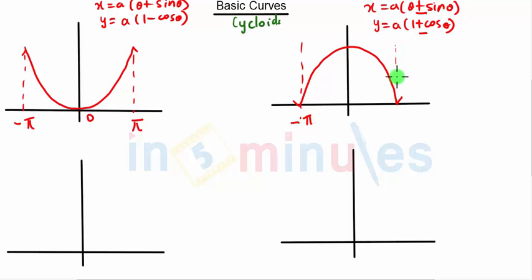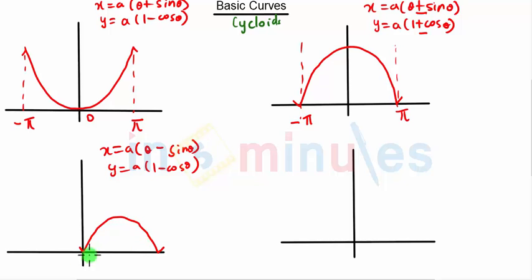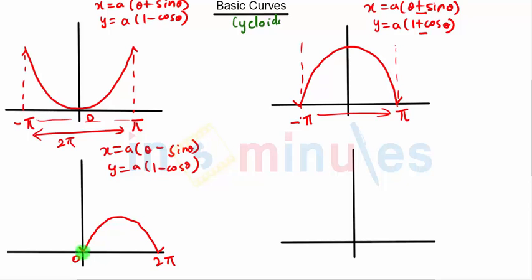This point will be -π and this point will be π. When both terms are negative — that is, x = a(θ - sin θ) and y = a(1 - cos θ) — the curve will be displaced from the origin. This point will be 0 and this will be 2π, because the total interval is π and -π, totaling 2π.